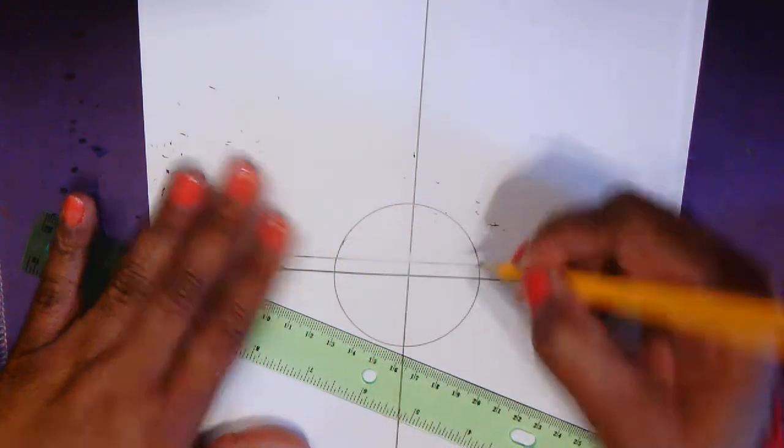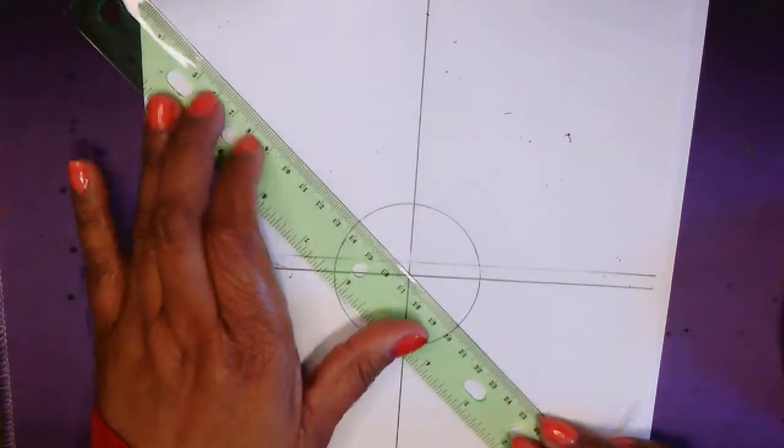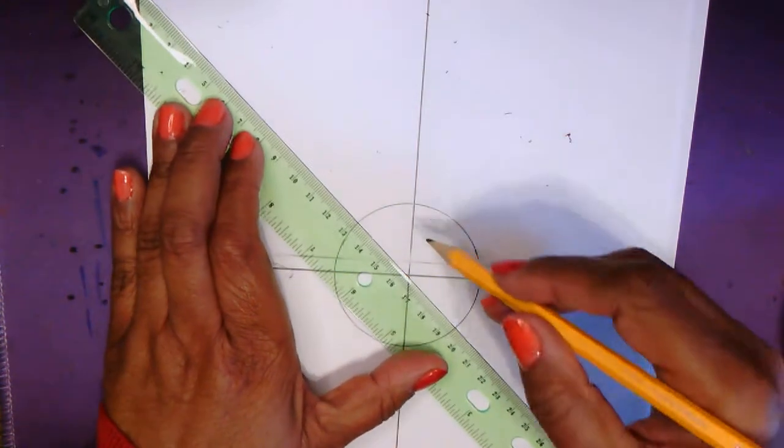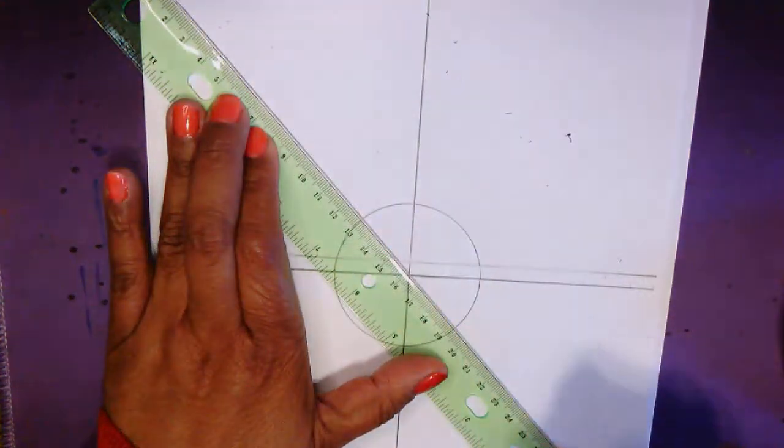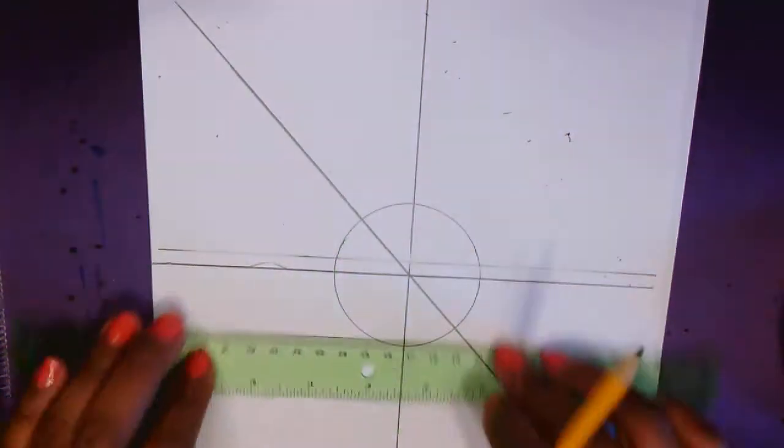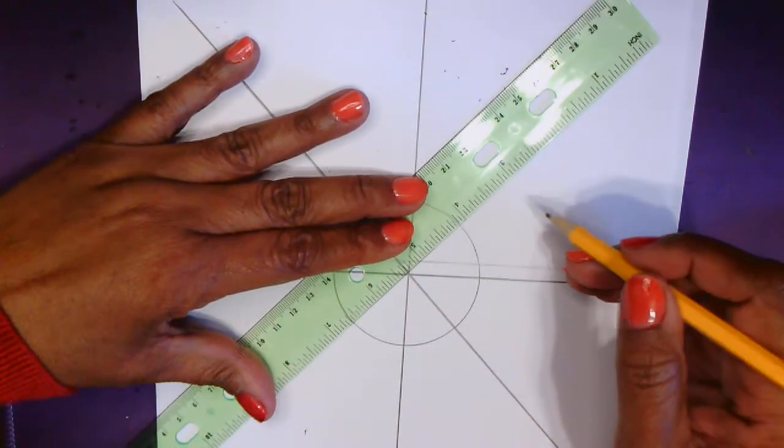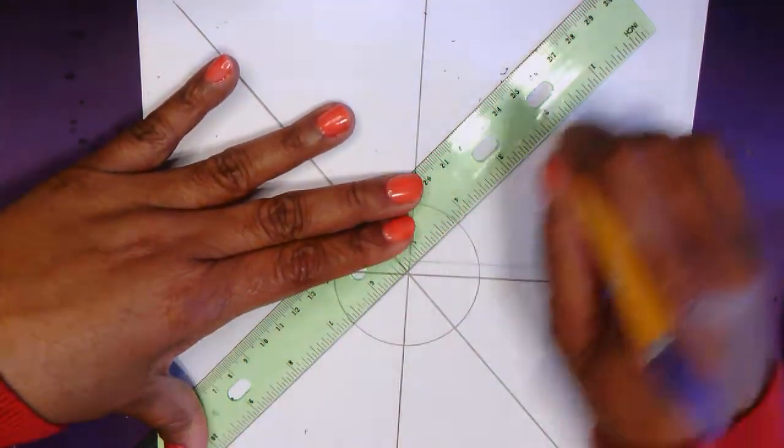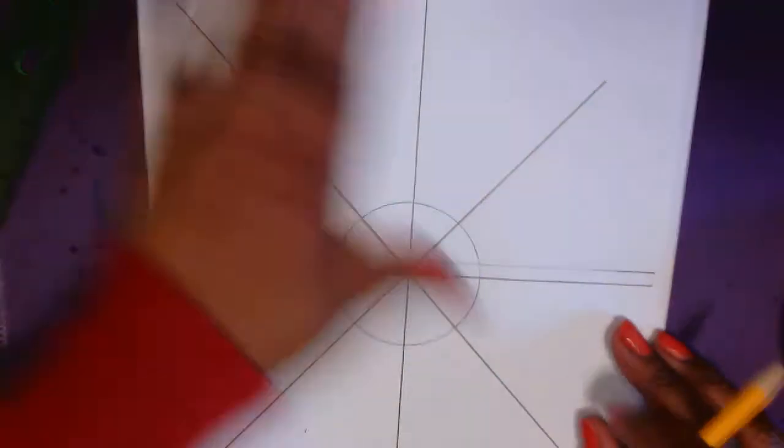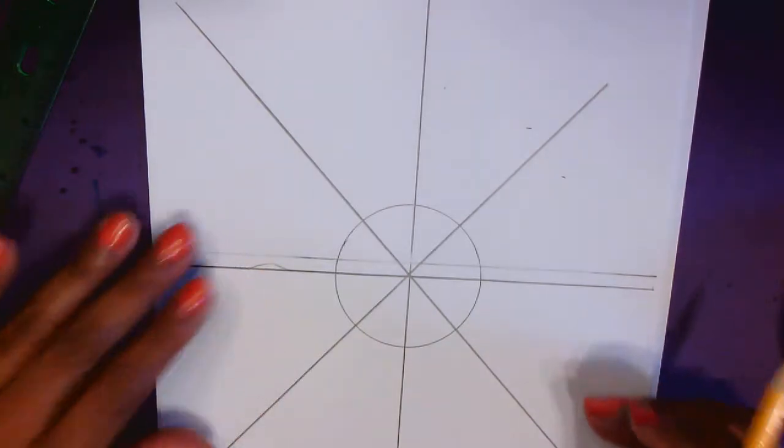Alright, now I need you to draw an X. So right through the center. Let's draw an X. So we're cutting up our circle like a pizza pie. There we go. We got it like a pizza pie. Perfect.